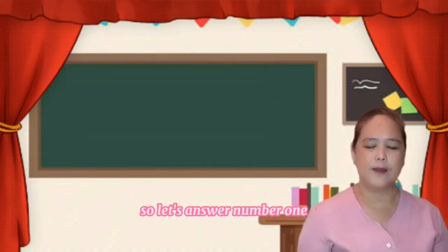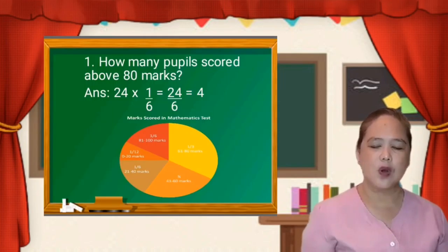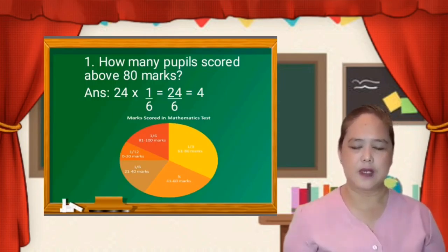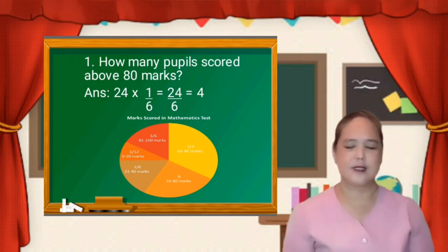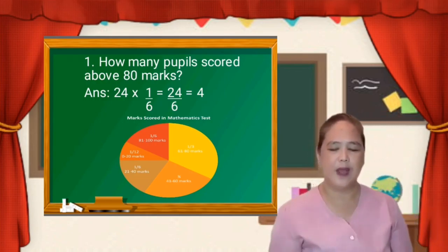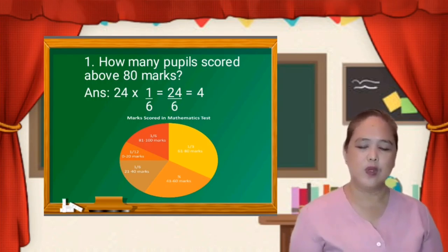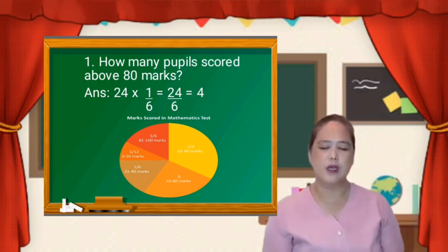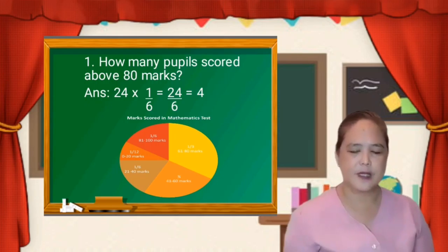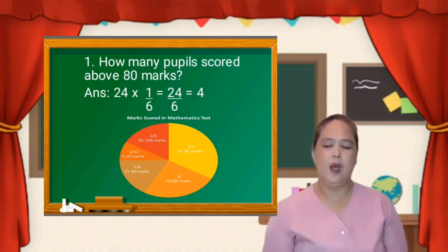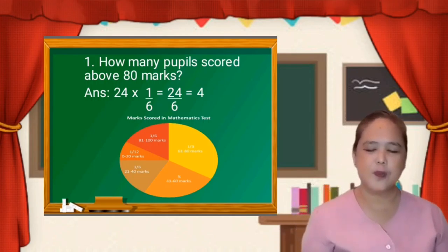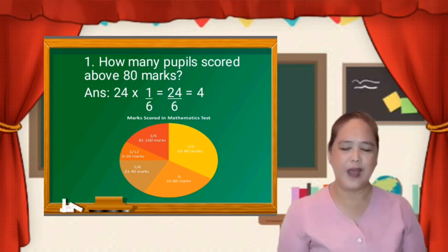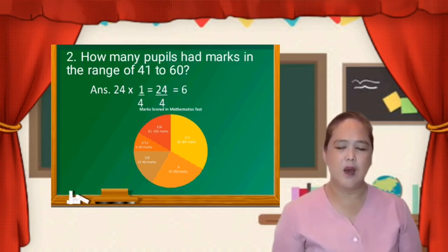Let us answer number one. How many pupils scored above 80 marks? Looking at the pie graph, we have 1/6 who scored above 80 marks. So we are going to multiply it by 24 because there are 24 pupils. So 24 times 1 is equal to 24, divided by 6 is equal to 4. Meaning to say, there are 4 pupils who scored above 80 marks.